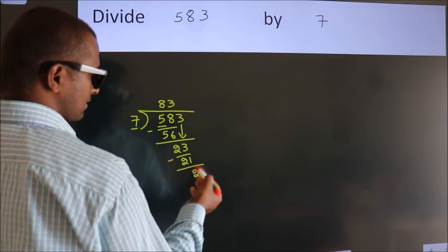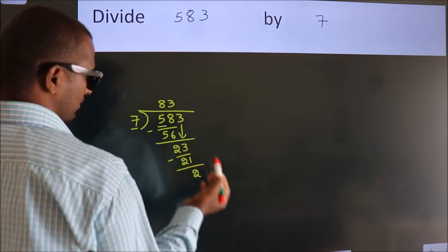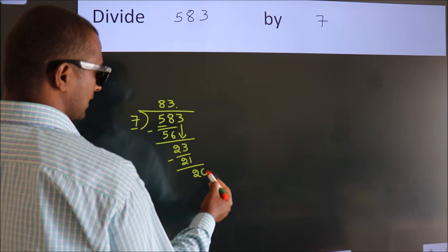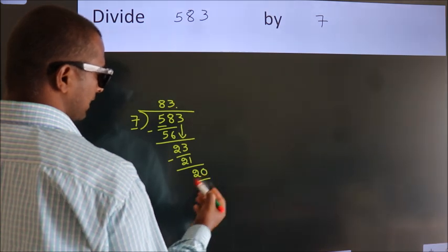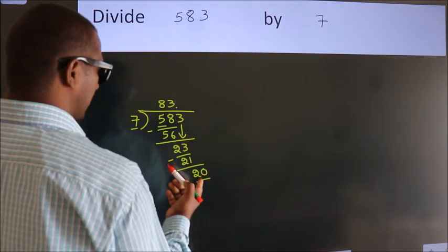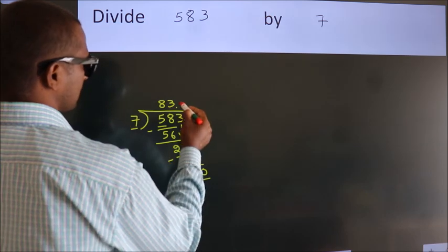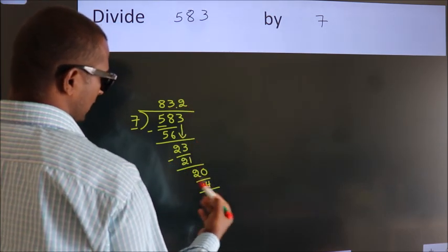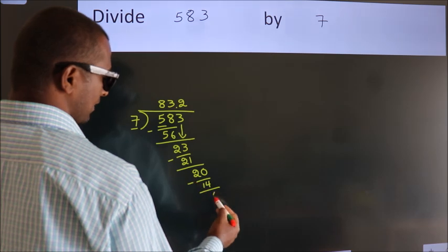After this, no more numbers to bring down. So what we do is put a dot and take 0, giving us 20. A number close to 20 in the 7 table is 7 times 2, 14. Now we subtract. We get 6.